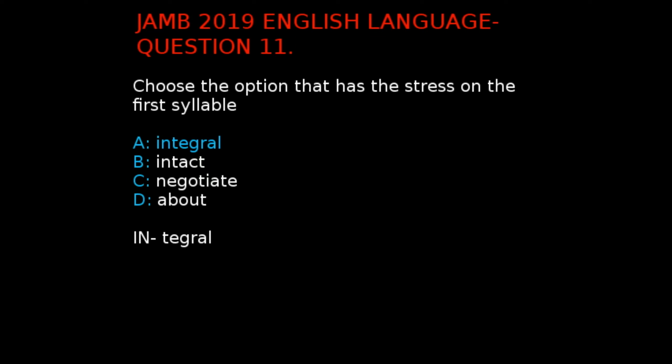It is pronounced 'IN-te-gral'. Option B, intact, has its stress on the second syllable, which is 'act'. Option C, negotiate, has its stress on the second syllable, which is 'go'. And D, about, has its stress on the second syllable, which is 'bout'. So the correct answer to this question is integral.